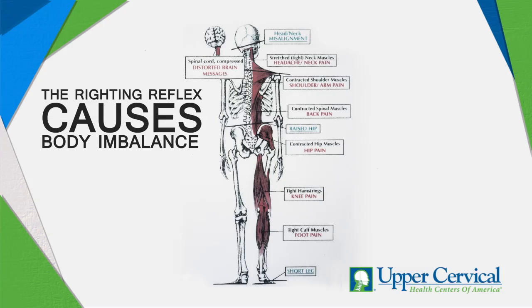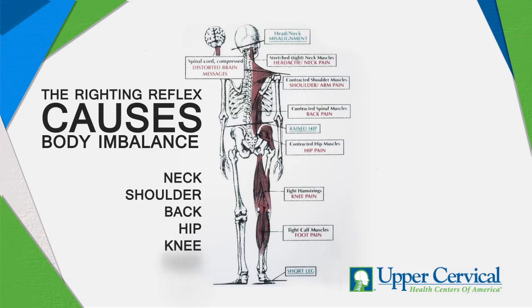This creates a visual balance to the horizon for balance and equilibrium, but it creates body imbalance all the way from the top of your head to the soles of your feet, which can result in contracted tight muscles on one side of your spine versus the other. This creates pain and tenderness in your neck, shoulder, back, hip, knee, foot, and leg.